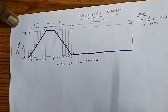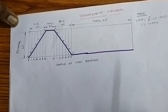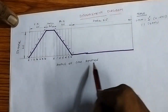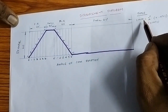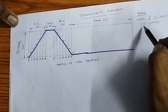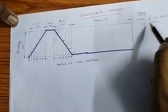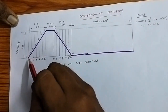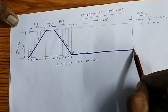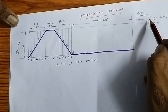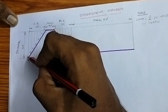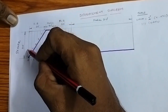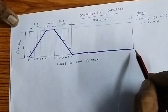First, we have to draw the displacement diagram for constructing the cam profile. X-axis: angle of cam rotation. Y-axis: stroke length. Scale: 1 mm equals 2 degrees on the x-axis, and 1 to 1 on the y-axis. Total cam rotation is 360 degrees, so the x-axis length is 180 mm. Y-axis length is 40 mm. Draw the bounding box.